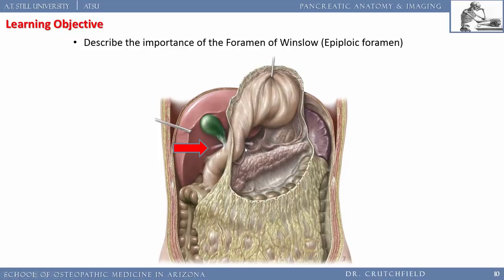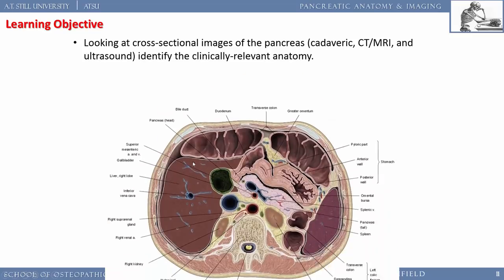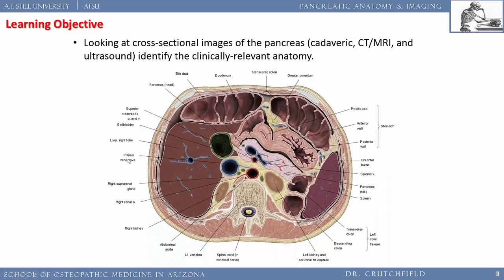The foramen of Winslow is a direct anatomical opening into the lesser sac. Rarely, a piece of small intestine can migrate into the lesser sac — I've seen one case where a patient had a bowel obstruction from small bowel herniating through the foramen of Winslow. It's rare but worth knowing. Now let's look at cross-sectional anatomy.